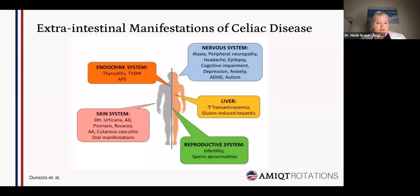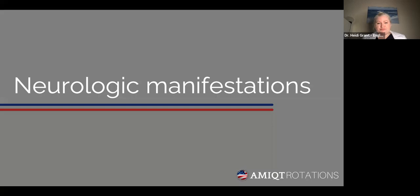Neurologic manifestations include ataxia, peripheral neuropathy, headache, epilepsy, cognitive impairment, and some neuropsychiatric aspects.